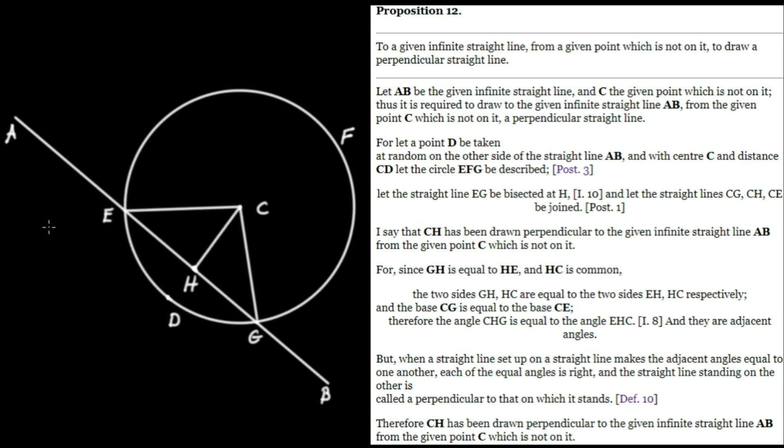Now we're going to prove that these angles here and here are right angles. Euclid says, I say that CH has been drawn perpendicular to the given infinite straight line AB. So here's CH that he claims has been drawn perpendicularly to the infinite straight line AB from the given point C, which is not on it.